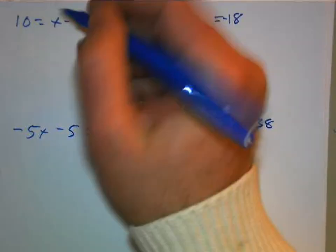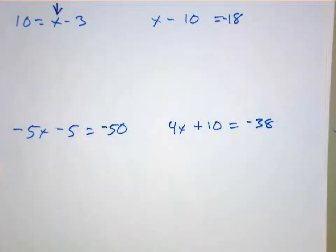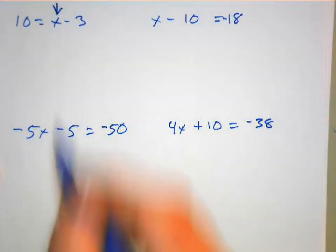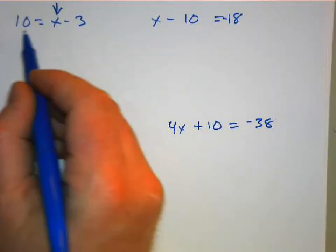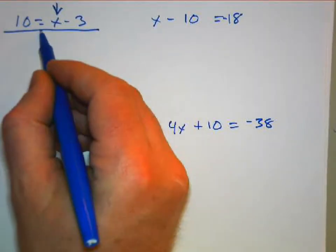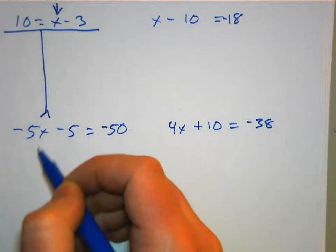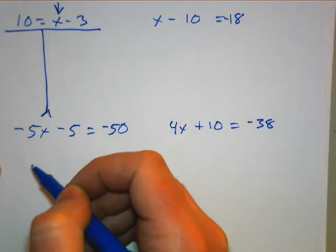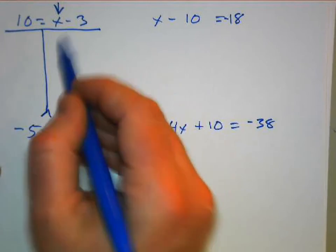So to isolate the variable, we want to get the variable all by itself. To start with, we're going to draw a little teeter-totter here, and this teeter-totter is going to help us maintain balance in our equation. Whatever we do on one side of this equation, we're going to do on the other so that this teeter-totter doesn't go up or down. We want it to maintain balance.